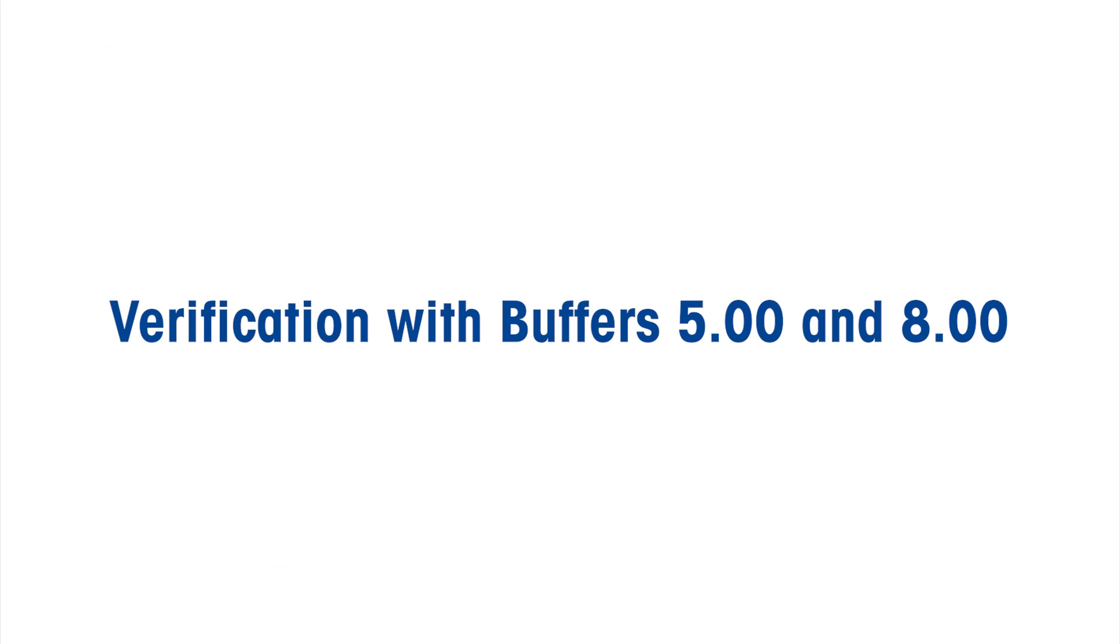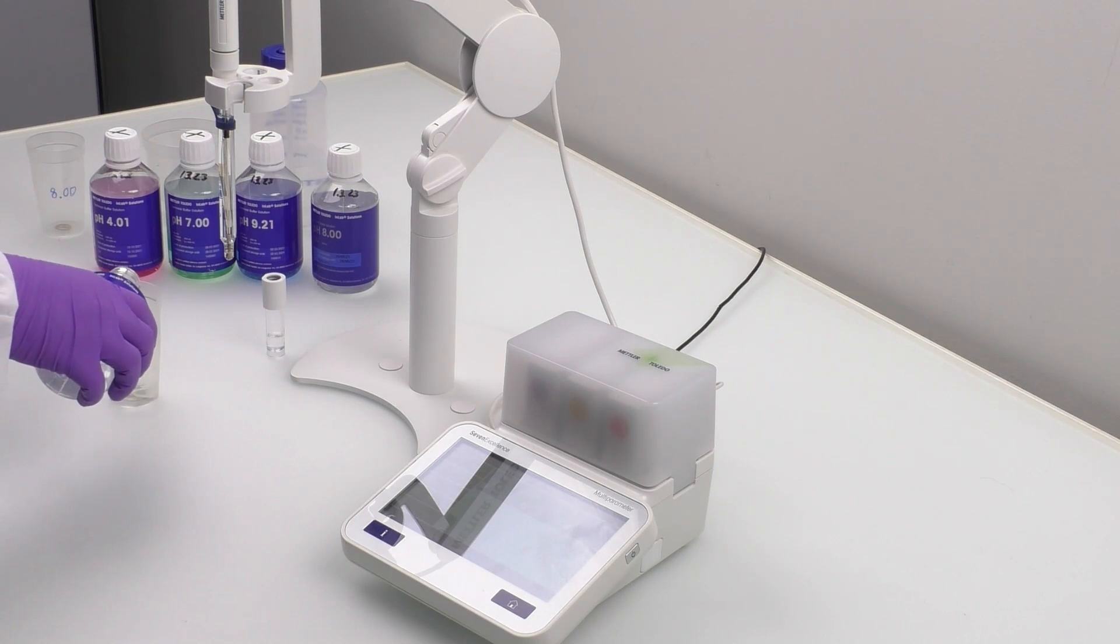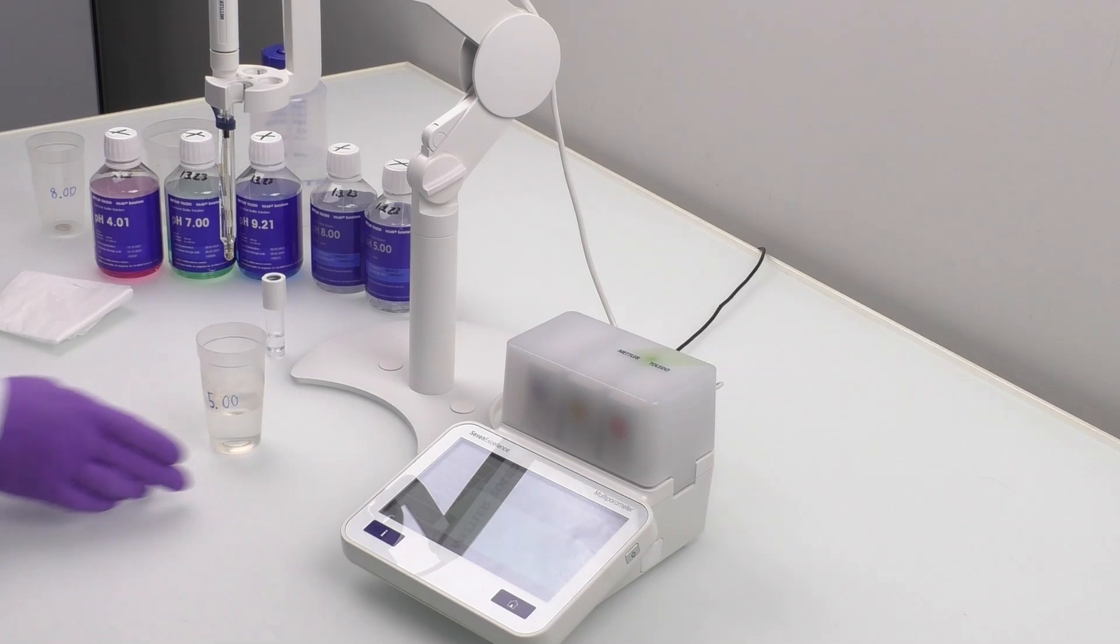After the calibration, the next step is to perform verification with pH buffers for each segment. In our case, we will be using pH buffers 5.00 and 8.00 since they're within the three calibration segments. To perform pH 5.00 verification, pour around 40 milliliters of the buffer into a pre-labeled beaker and immerse the sensor completely in the solution.